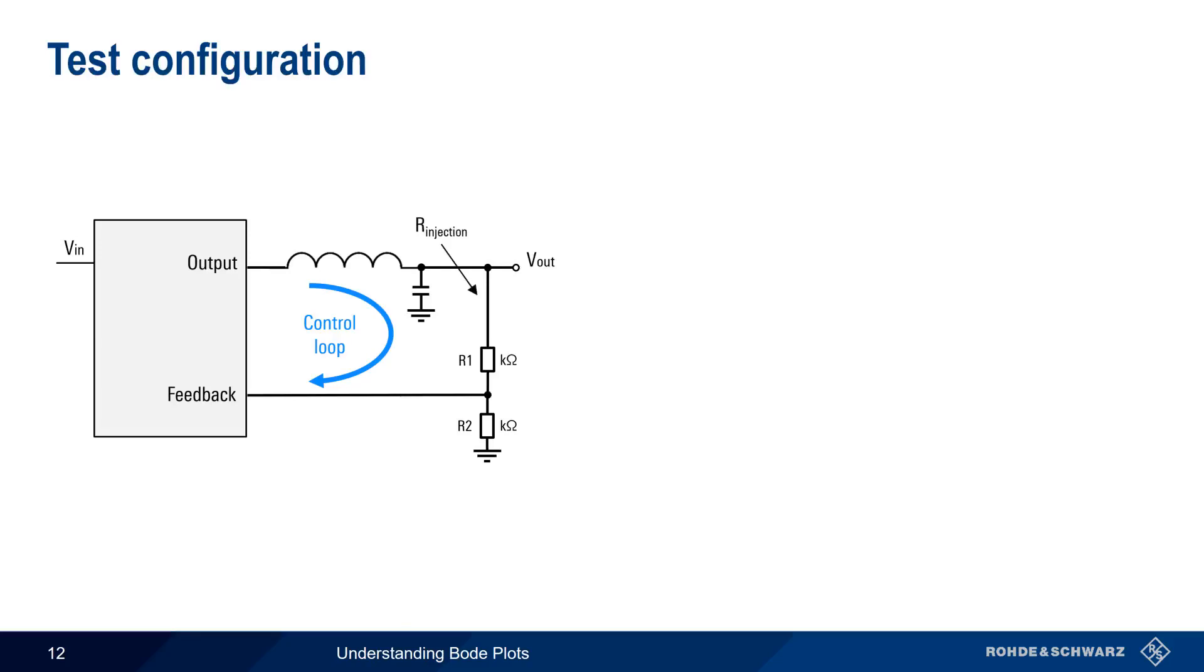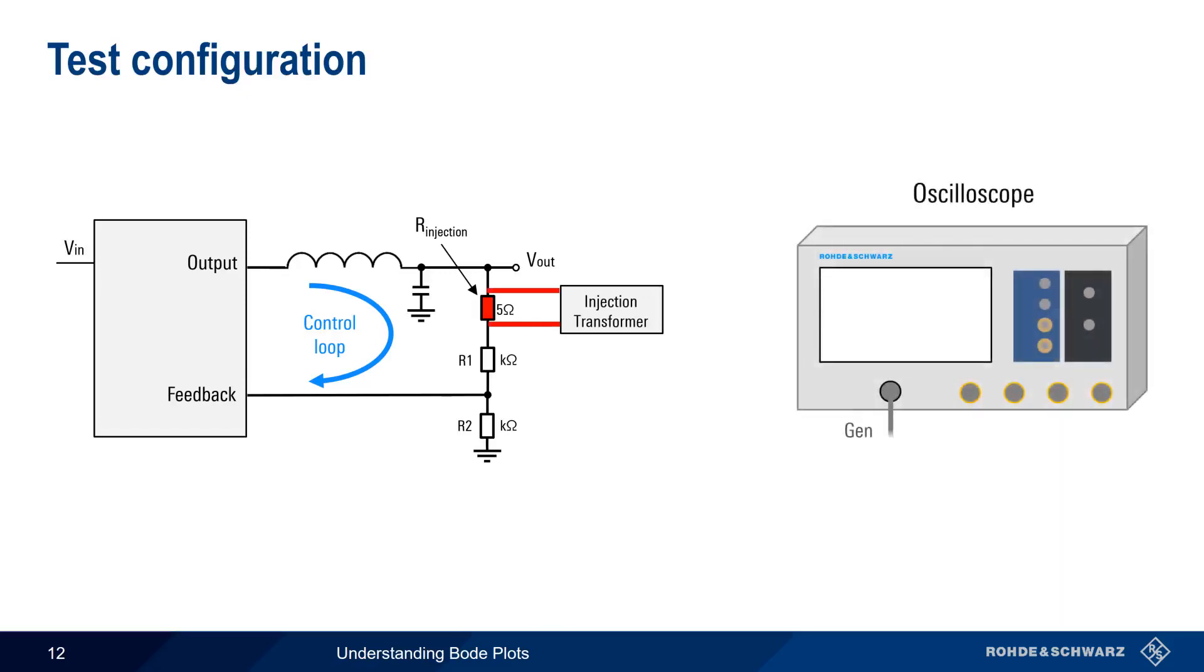We'll select this point, since here the impedance looking backwards is the converter output impedance, which is very low, in the range of several milliohms. We then place a small resistor at the injection point, and the disturbance voltage is applied in parallel to the injection resistor using a wideband injection transformer.